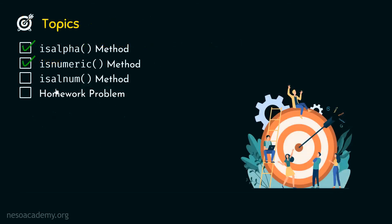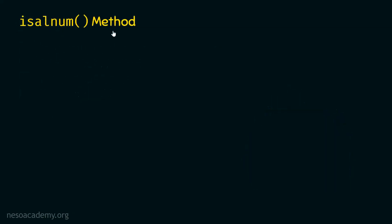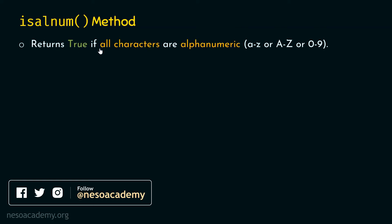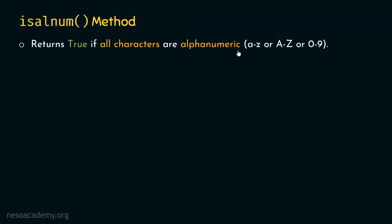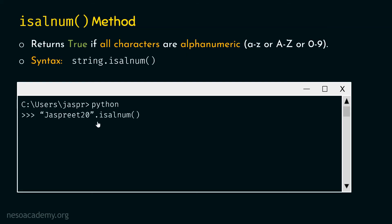Now let's move on to the next topic, which is the isalnum method. What is the isalnum method? The isalnum method returns true if all characters are alphanumeric — as the name suggests, it combines alpha and numeric. The syntax is: string dot isalnum with parentheses. Let's open the command prompt and type 'justpreach20'.isalnum(). If we hit enter, we get true, because this string is a combination of alphabet and numbers.